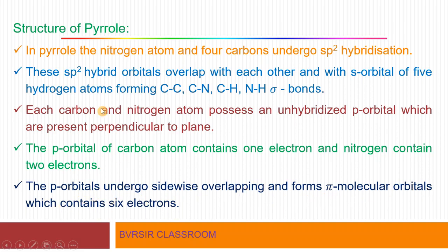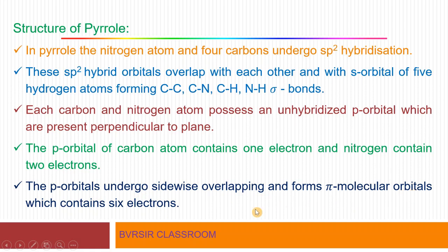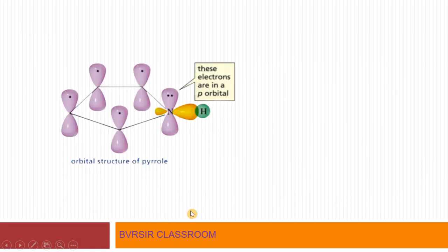The P orbitals undergo sidewise overlapping and form pi molecular orbitals which contain six electrons. The total number of carbons is four; each carbon contributes one electron from its unhybridized P orbital, giving four electrons. Nitrogen contributes two electrons from its unhybridized P orbital. So the total number of electrons is six. The P orbitals undergo sidewise overlapping and form pi molecular orbitals containing six electrons.